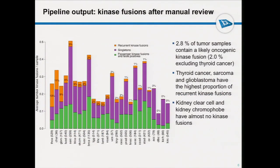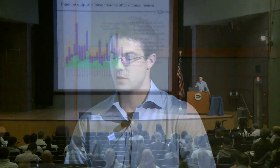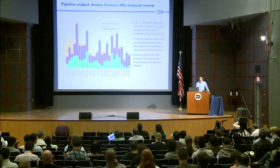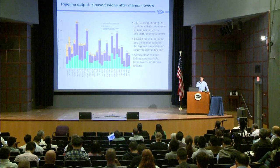The output of the pipeline is presented here across several tumor types. As expected, the frequency of kinase fusions or recurrent kinase fusions varies greatly from one cancer to another. Thyroid cancer, as it is known, contains more than 13 percent of such events. And on average, across solid tumors, there is about 2 percent of recurrent kinase fusions.